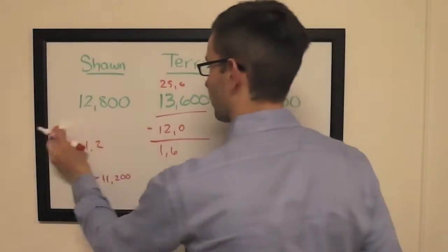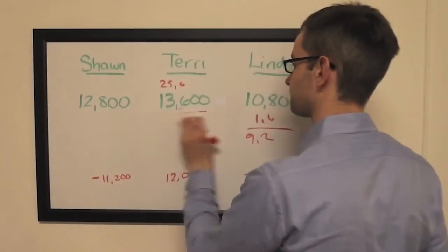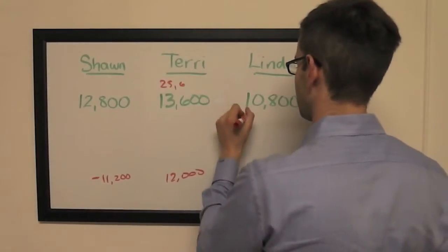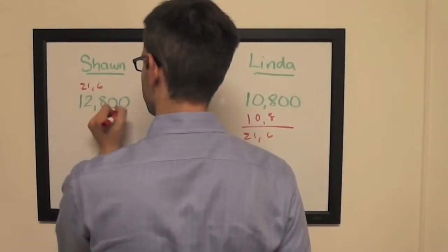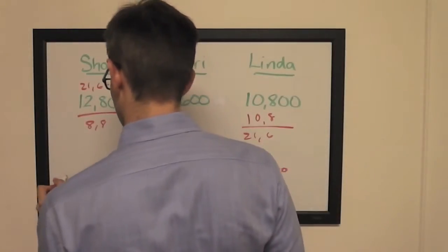Alright, second and third now, Shawn and Linda. Linda doubles up, she will have $21,600. So to cover her, Shawn will need to wager $8,800.